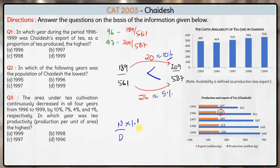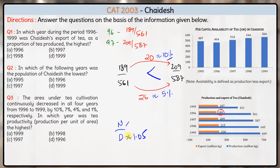The numerator is increased by 10 percent — multiplied by 1.1 — and the denominator is increased by 5 percent — multiplied by 1.05. So we are effectively multiplying the fraction by 1.1 upon 1.05, which is greater than 1. So the new ratio will be greater. Hence 209 upon 587 is greater than 189 upon 561, meaning the ratio in 1997 is the greatest of all four years. The answer to this question is option B.